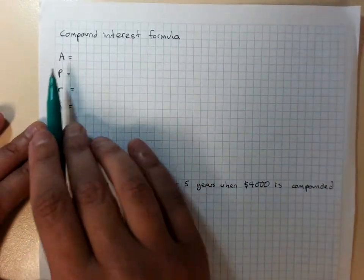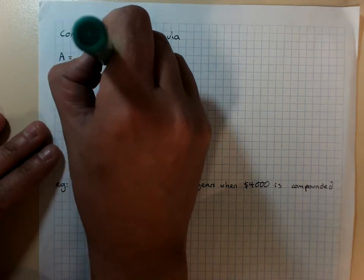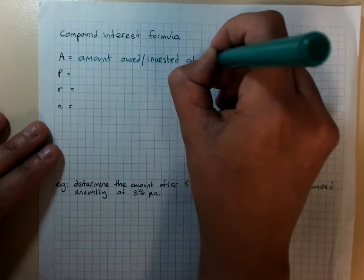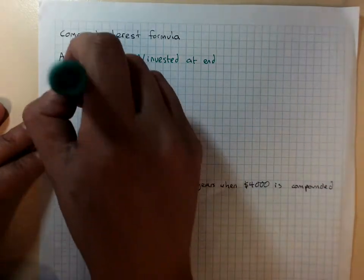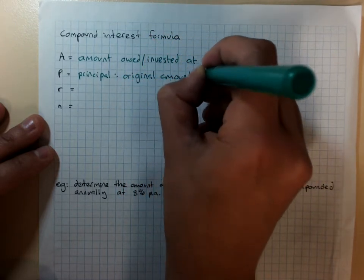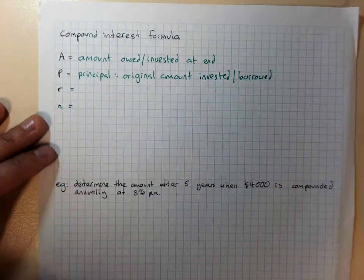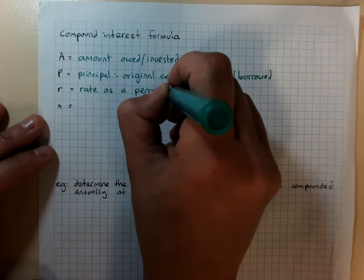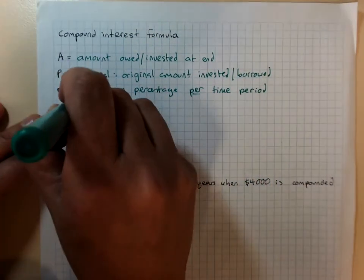The compound interest formula has some very similar things to the simple interest formula. A is the amount owed or invested at the end. So the amount in the bank, or the amount that we owe at the end of the loan or investment period. P, the principal, which is the original amount invested or borrowed. R is your interest rate as a percentage per time period. And we'll talk more about what that means later. N is the number of time periods.